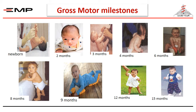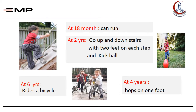Walking supported at the age of one year, then walking freely at the age of 15 months. The list of milestones continues, and children will be able to run, go up and down stairs, and ride a bicycle at different ages, as you can see in the photos. For further details, please refer back to your learning guides.